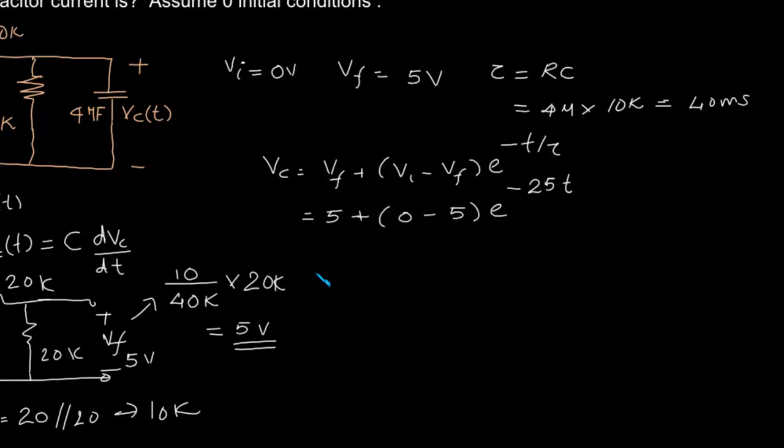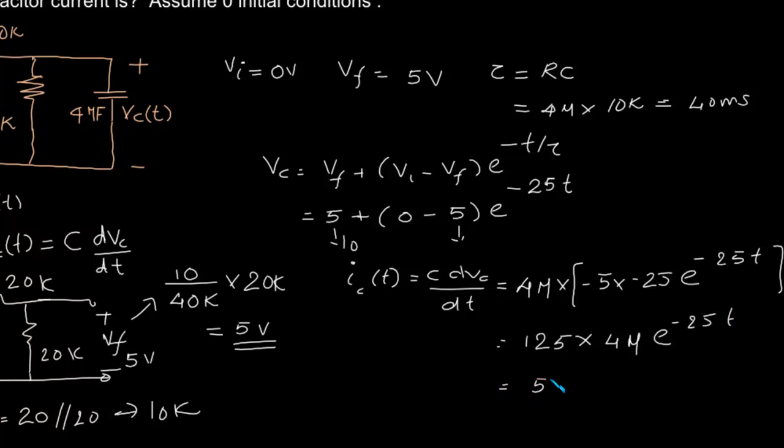So we have found out what is Vc. Now to find Ic what we have to do, we have to find out C dVc by dt, that is C, 4 microfarads, into derivative of this. The derivative of 5 will be 0, this one will be minus 5 into minus 25 into e power minus 25t. That is nothing but 125 into 4 micro, e power minus 25t, that is 500 e power minus 25t microamps.